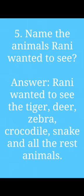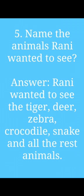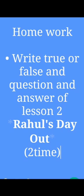Fifth and last question: Name the animals Rani wanted to see. The answer is: Rani wanted to see the tiger, deer, zebra, crocodile, snake, and all the rest of the animals. Now students, your today's homework is to write the true or false and question and answer of lesson number 2, Rahul's Day Out, two times in your English notebook and send on WhatsApp. Thank you.